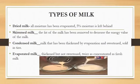Another four types of milk are dried milk, skim milk, condensed milk, and evaporated milk. Dried milk, as the name shows, becomes dry after removing all the moisture from it — only 5% moisture is left behind. Skim milk is the one from which the fat of the milk has been removed, to decrease the energy value of the milk.